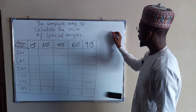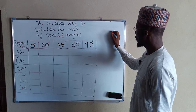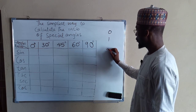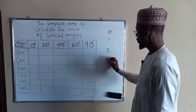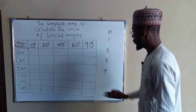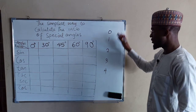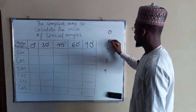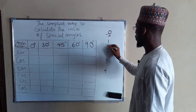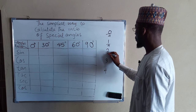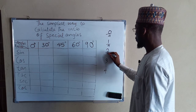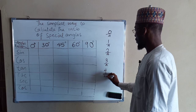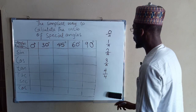First of all, arrange your numbers in ordinary manner like this: 0, 1, 2, 3, 4. After arranging these numbers, divide each of them by 4.